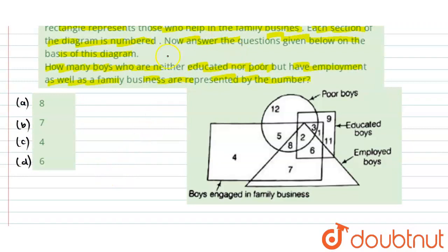Now, the question asks about boys who have employment as well as family business. So we need the overlapping area between the rectangle and triangle.